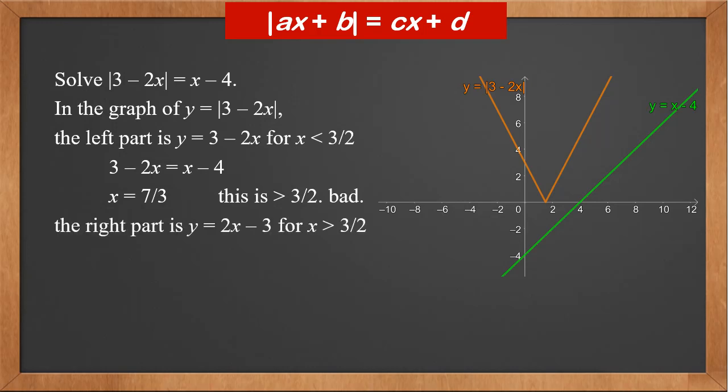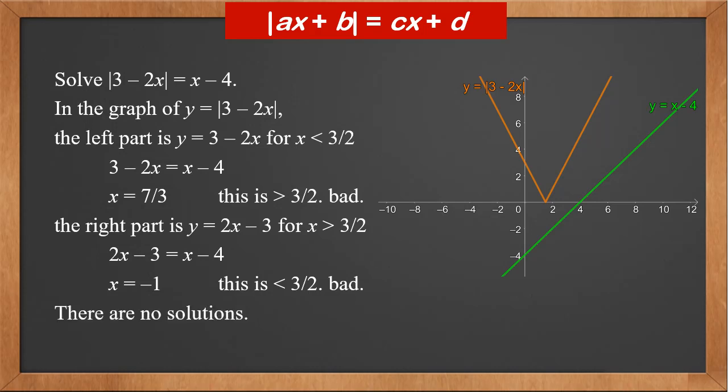The right part is two x minus three for x greater than three over two. So two x minus three equals x minus four. Therefore, x is minus one. It is less than three over two, so it's not a valid solution. Looking at the graph, we can see that both solutions are below the x-axis. Therefore, there are no solutions.